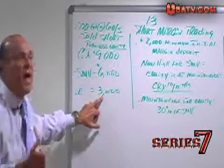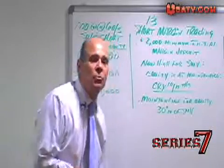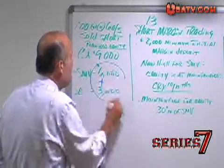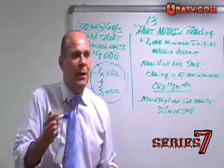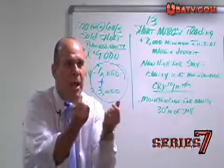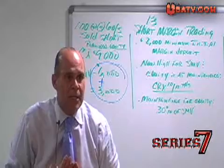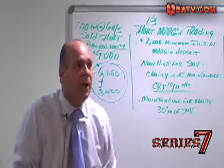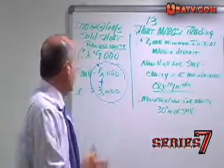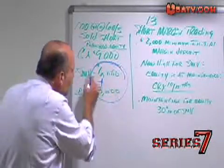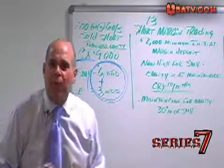Your client deposits $3,000 — 50% of the short market value of $6,000. When your client shorts 100 shares of stock at $60 a share, it generates $6,000 in short sale proceeds coming into the account. His deposit of $3,000 — 50% of the short market value — is also coming in. All of this money coming into the account establishes a component on the short side called the credit balance.